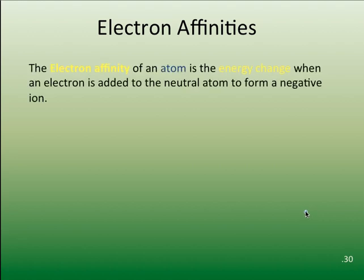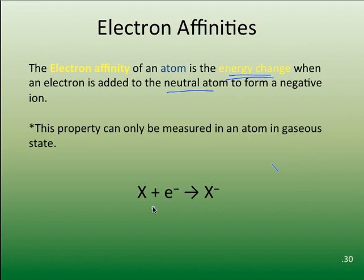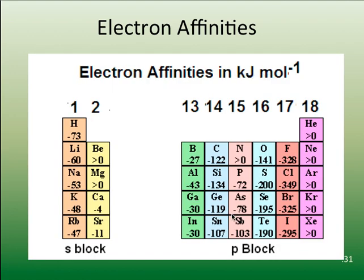Electron affinity is the energy change when an electron is added to a neutral atom to form a negative ion. This is the equation for electron affinity and it can only be measured for an atom in the gaseous state: a neutral atom adding an electron to become a negative ion. Here is a table of electron affinities in kilojoules per mole.